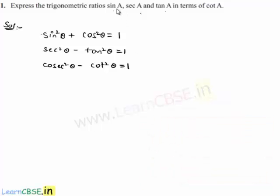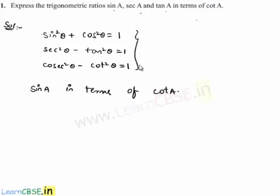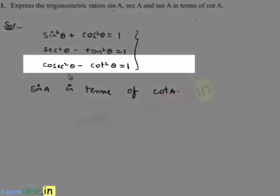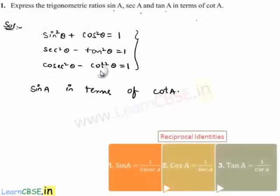Now let us initially consider the conversion of sine a in terms of cot a. In order to convert sine a in terms of cot a, let us consider the identity which suits this conversion. If we observe the third identity, we have it in terms of cosecant and cot. So it is easy to convert cosecant into sine using the formula cosecant theta equals 1 by sine theta.